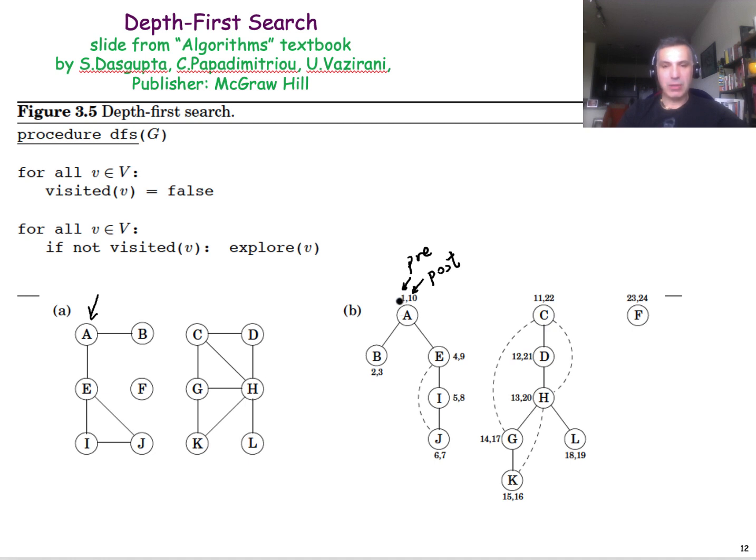that's the time that A gets into the stack, that's why it gets the pre-timestamp of 1. Then we explore B, it gets the pre-timestamp of 2. But then there are no neighbors of B to explore further, so B is popped out of the stack, and it gets the post-timestamp of 3.